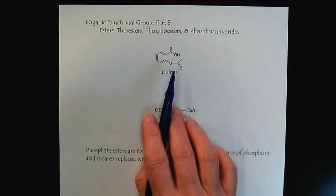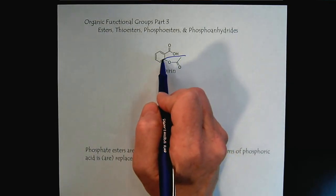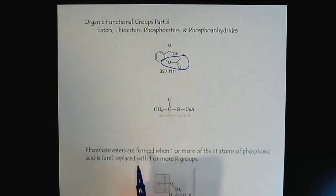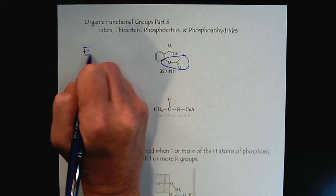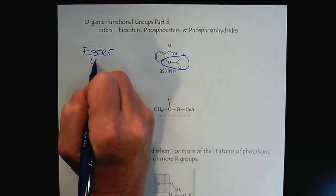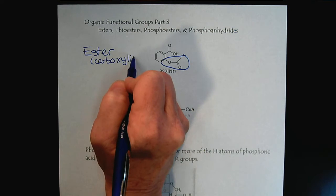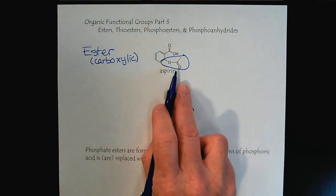We can see here the aspirin. Aspirin is a great example. We can recognize the ester there. So we would describe this as an ester. And many times when you just hear the word ester, it's understood to be a carboxylic ester because it's a derivative of a carboxylic acid.